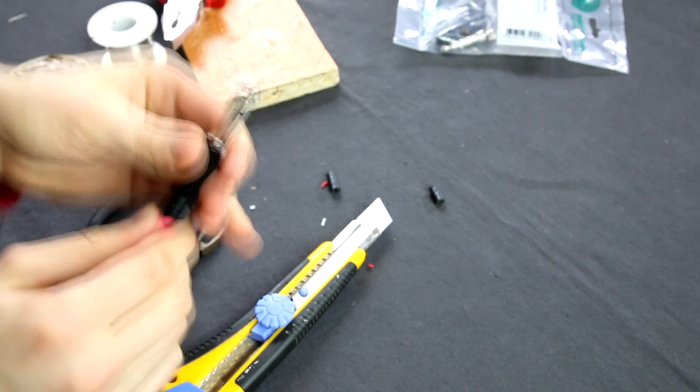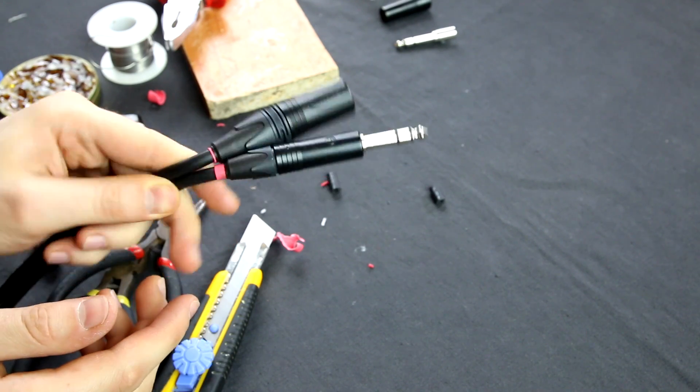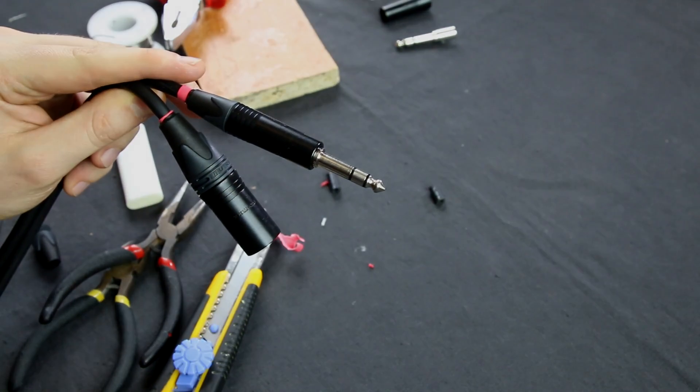Now put on the 6.35 millimeter nozzle. There are the both wires balanced XLR to 6.35 millimeter TRS.